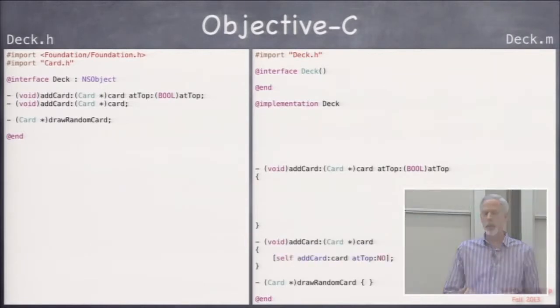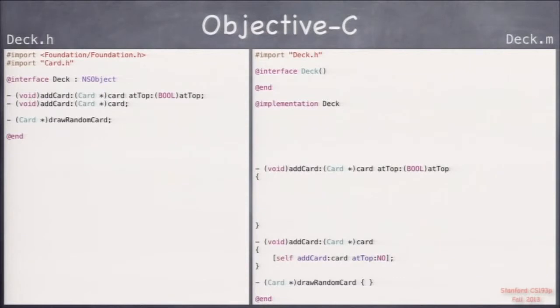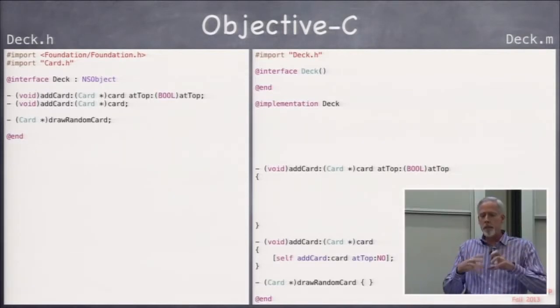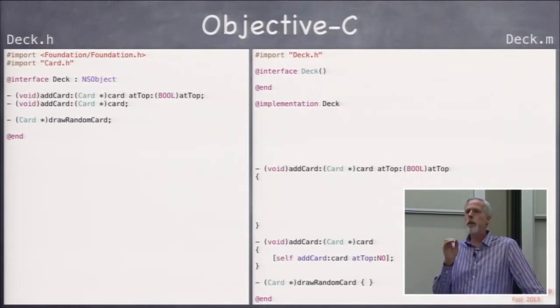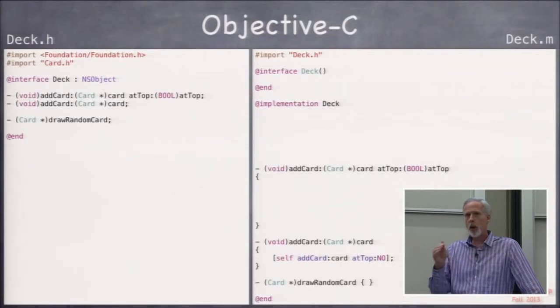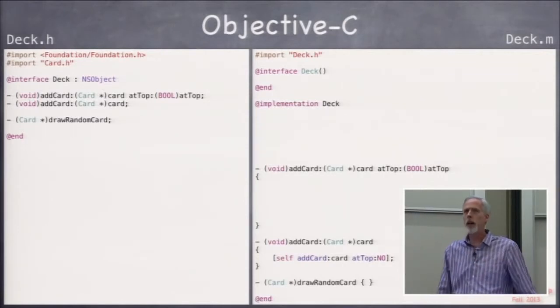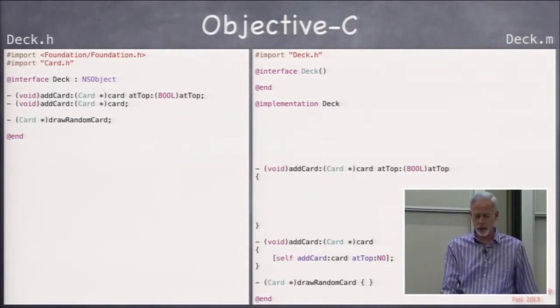In addCard, we're going to say self addCard:atTop: whatever we want the default to be, which I'm going to say is no. Just understand that in some languages some arguments can be optional, or you can overload things. In Objective-C, every method is completely distinct and has a distinct name, and extra arguments are interspersed like that. These would be two different methods.